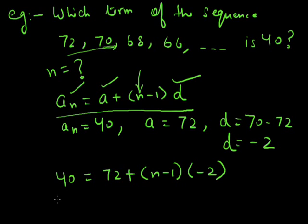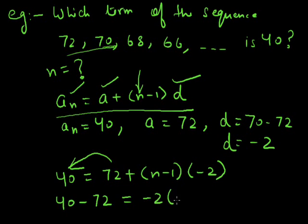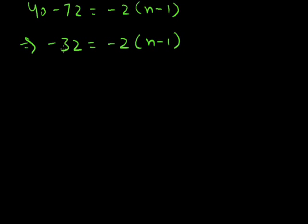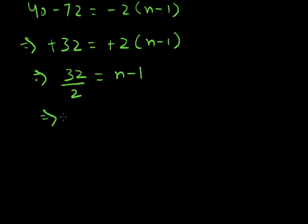Now solving this: moving 72 to the left side gives 40 minus 72, which equals minus 2 into (n-1). So minus 32 equals minus 2 into (n-1). Dividing both sides: 32 divided by 2 equals n minus 1, giving 16 = n - 1, and therefore n = 17.